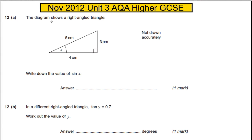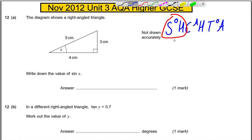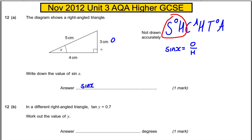Question 12 — the diagram shows a right angle triangle. Work out the value of sine x. Let's write down SOH-CAH-TOA. Sine comes from SOH, which means that sine of the angle — which is X in this case — must be the opposite divided by the hypotenuse.